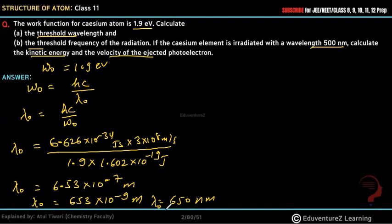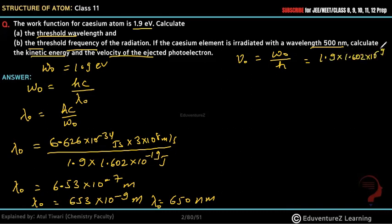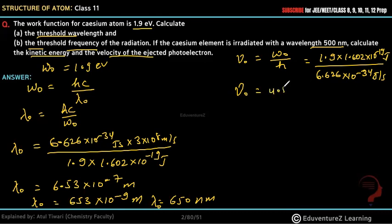Now we need to find the threshold frequency ν₀. Using ν₀ = W₀ / h, where W₀ = 1.9 × 1.602 × 10⁻¹⁹ Joules divided by Planck's constant 6.626 × 10⁻³⁴ Joule·second. The Joules cancel, giving us the threshold frequency ν₀ = 4.593 × 10¹⁴ per second.